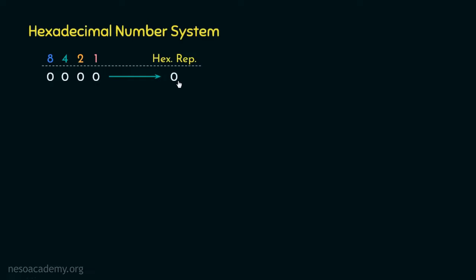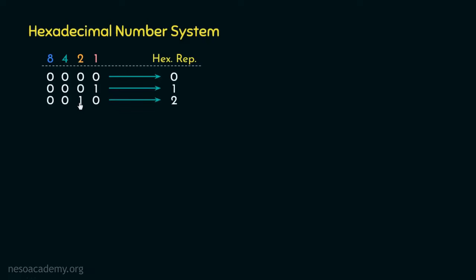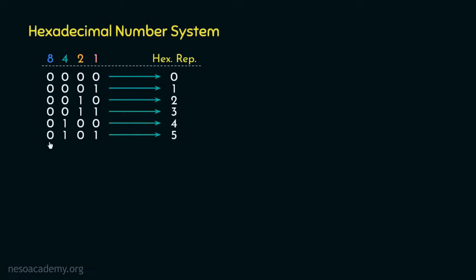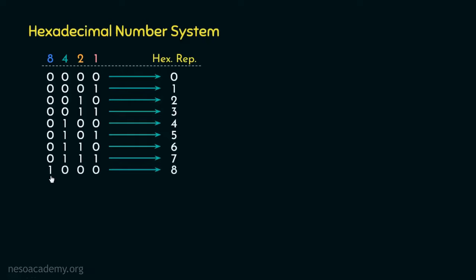0000 in hexadecimal is 0; 0001 is 1 because the one is placed under place value 1; 0010 is 2 as the one is beneath 2; 0011 is 3 because 2 plus 1 is 3; 0100 is 4 as the one is placed under 4; 0101 is 5 because 4 plus 1 is 5; 0110 is 6 because 4 plus 2 is 6; 0111 is 7 because 4 plus 2 is 6 and 6 plus 1 is 7. Then 1000 is 8 as the one is placed beneath 8, and 1001 is 9 because 8 plus 1 is 9.